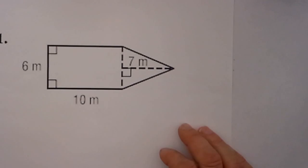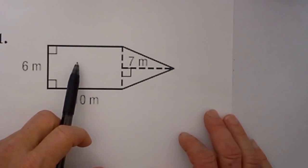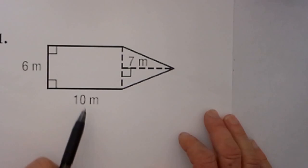Welcome to Moo Moo Math where we upload a new math video every day. In this video we'd like to work on finding the area of composite figures. A composite figure is a figure made up of more than one geometric shape.